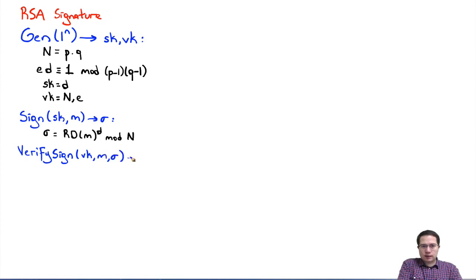And then we could verify the signature using the verification key VK, which is public, and given the message and the signature together, this outputs either accept or reject. It checked if the random oracle of M is indeed equivalent to sigma to the power E, of course modulo N. When you think about sigma to the power E, since E times D is 1, these will cancel out. This will give us random oracle of M, so this is a correct signature scheme.